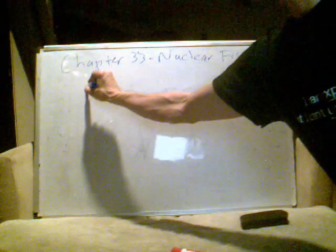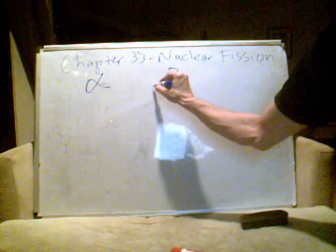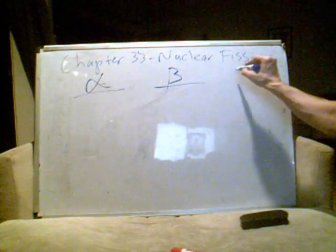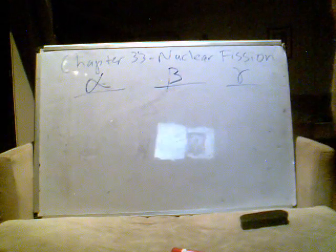Now, it behooves us to discuss the various mechanisms by which an atom can decay from one element into another. And there are three major ones. There is an alpha particle, or an alpha emission, a beta emission, or a beta decay, and a gamma emission, or a gamma decay.